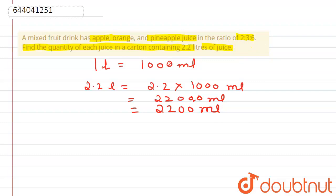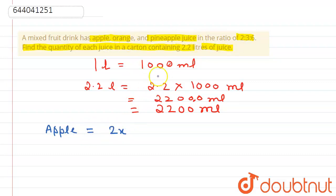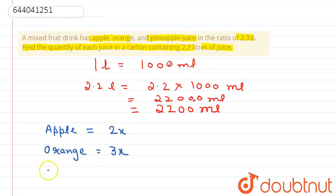Let us suppose that the quantity of apple juice is 2x, the quantity of orange juice is 3x, and the quantity of pineapple juice is 6x.